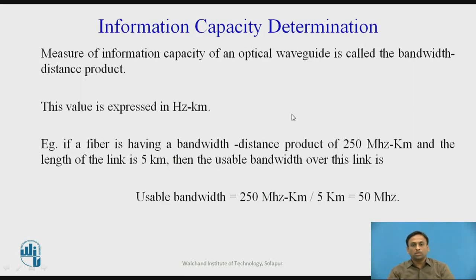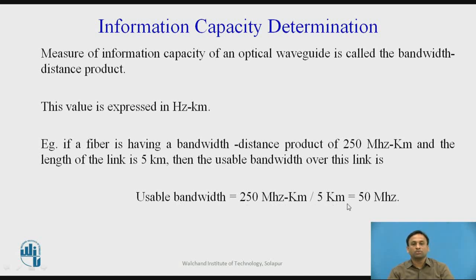Due to the spreading and broadening of light in optical fiber, the information-carrying capacity becomes less. To calculate the usable bandwidth, we use the bandwidth-distance product, expressed in MHz·km. For example, if a fiber has a bandwidth-distance product of 250 MHz/km and the link length is 5 km, then the usable bandwidth equals 250 MHz/km divided by 5 km, which equals 50 MHz. This 50 MHz represents the information-carrying capacity of the fiber optics.